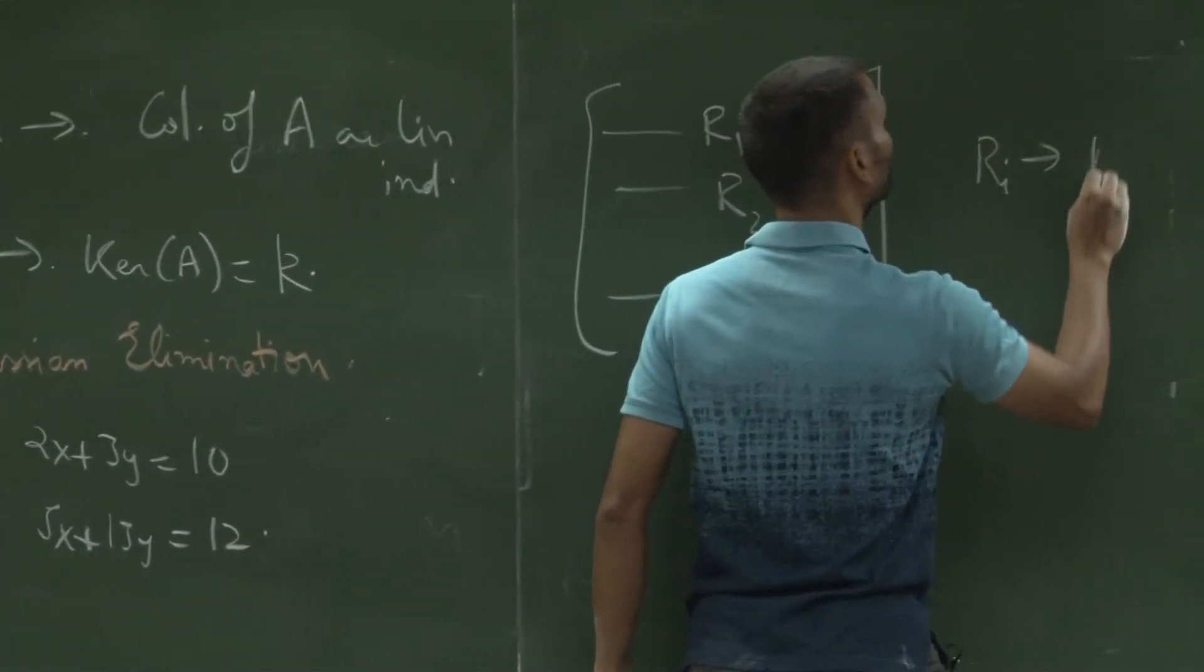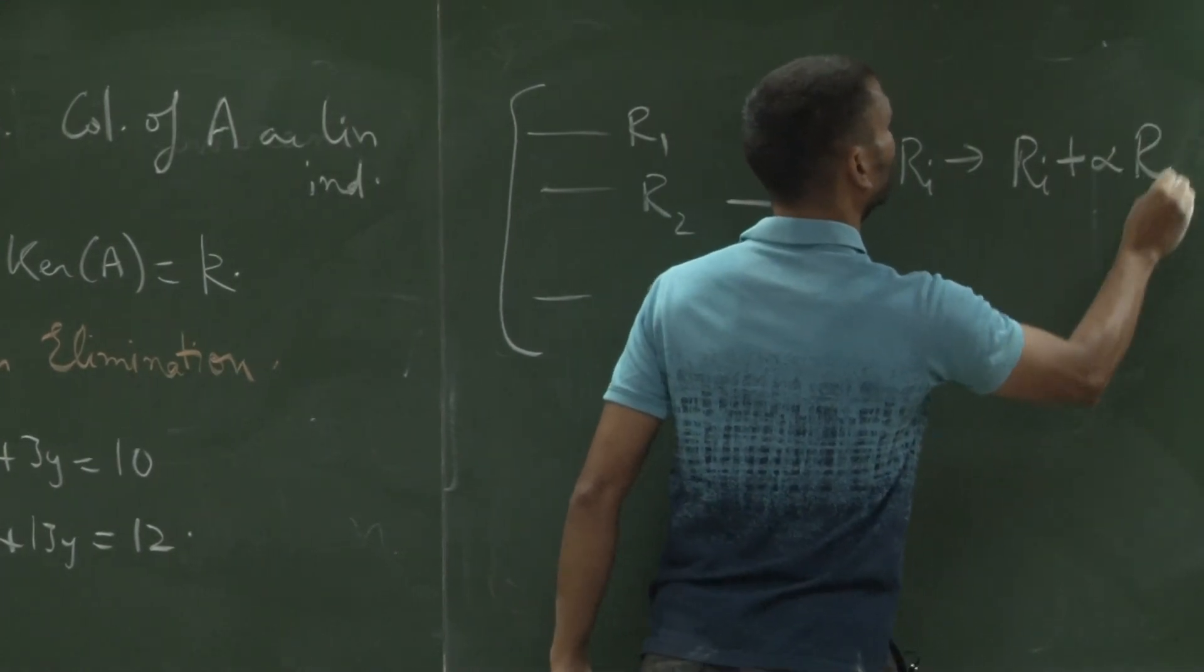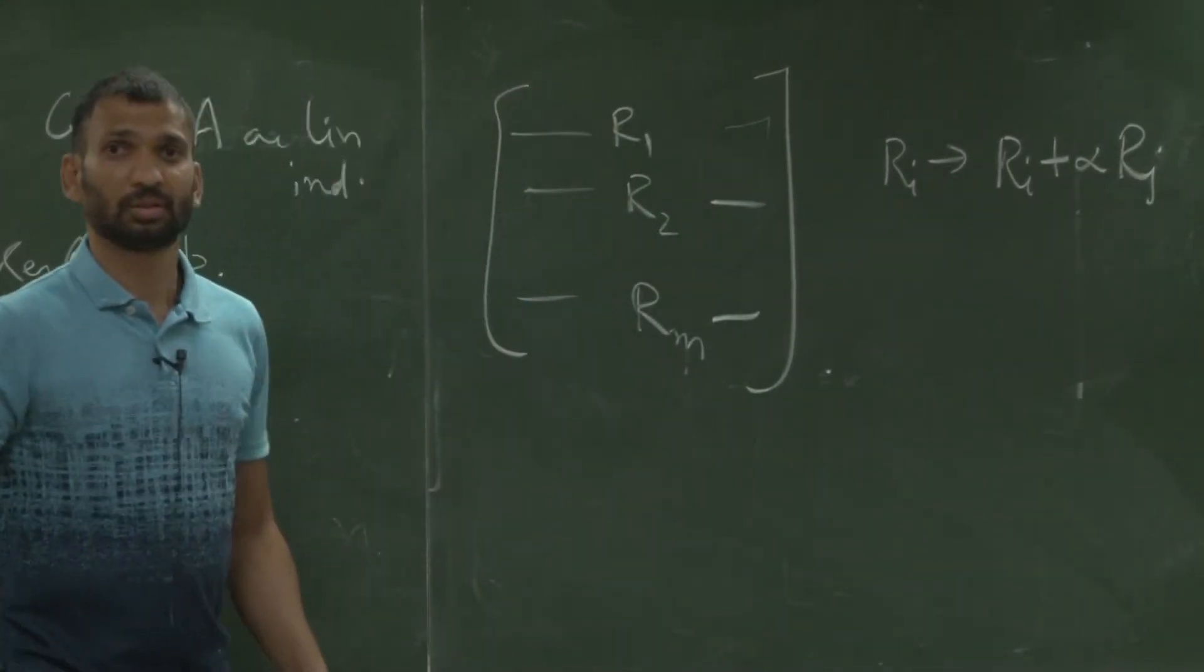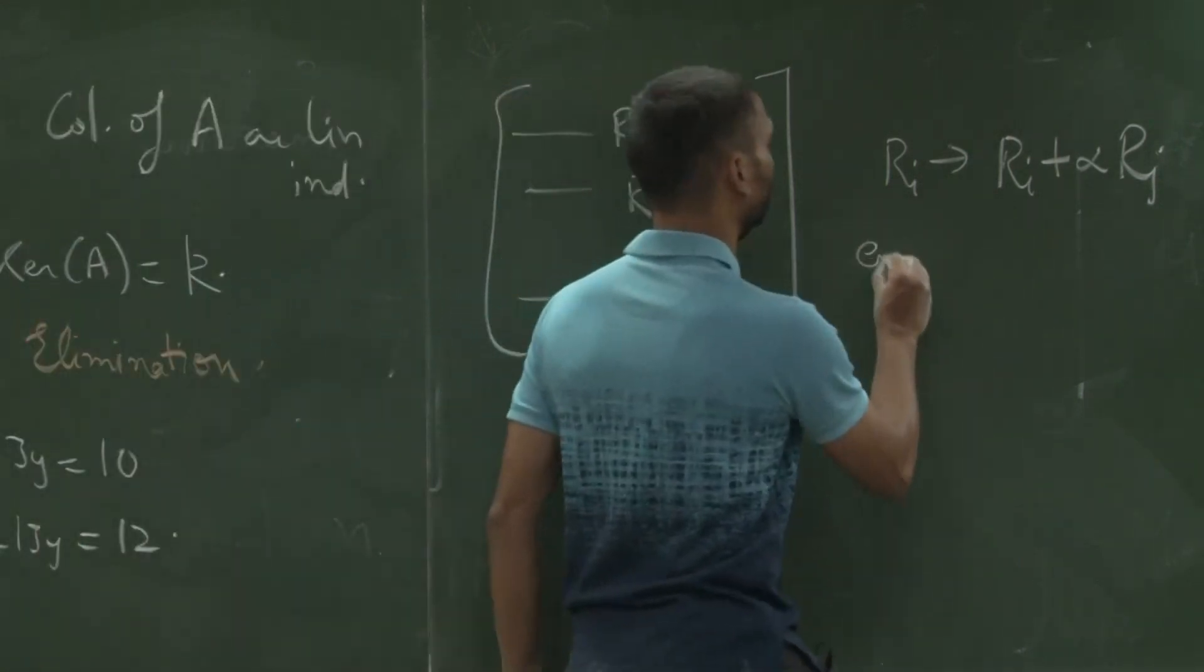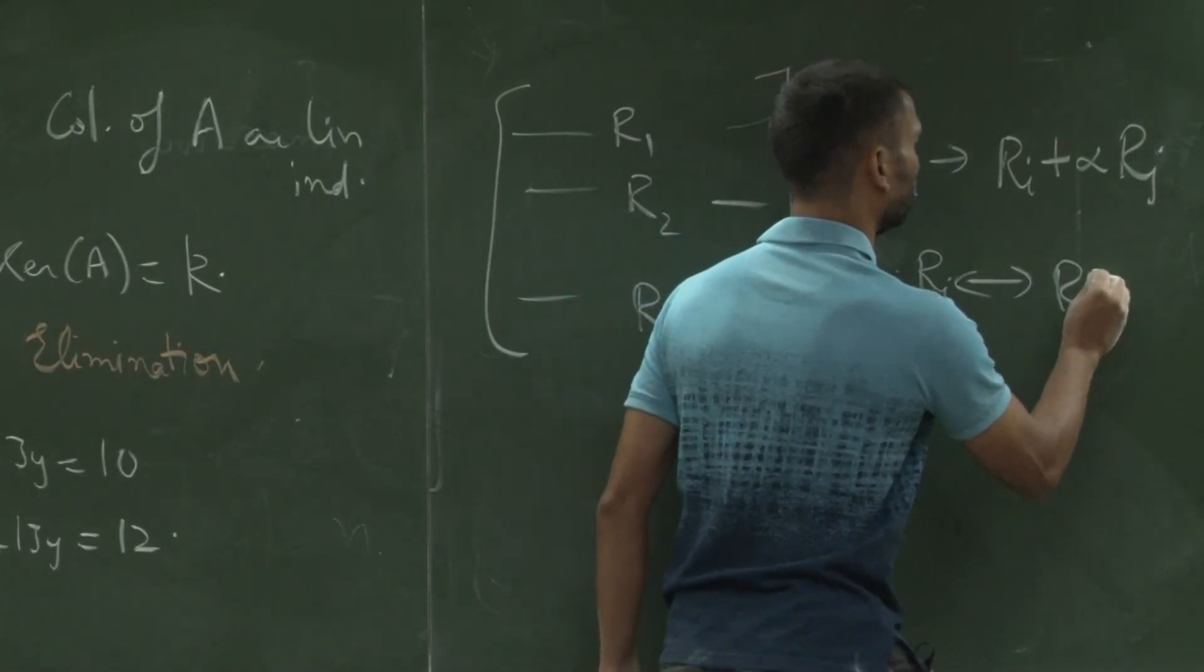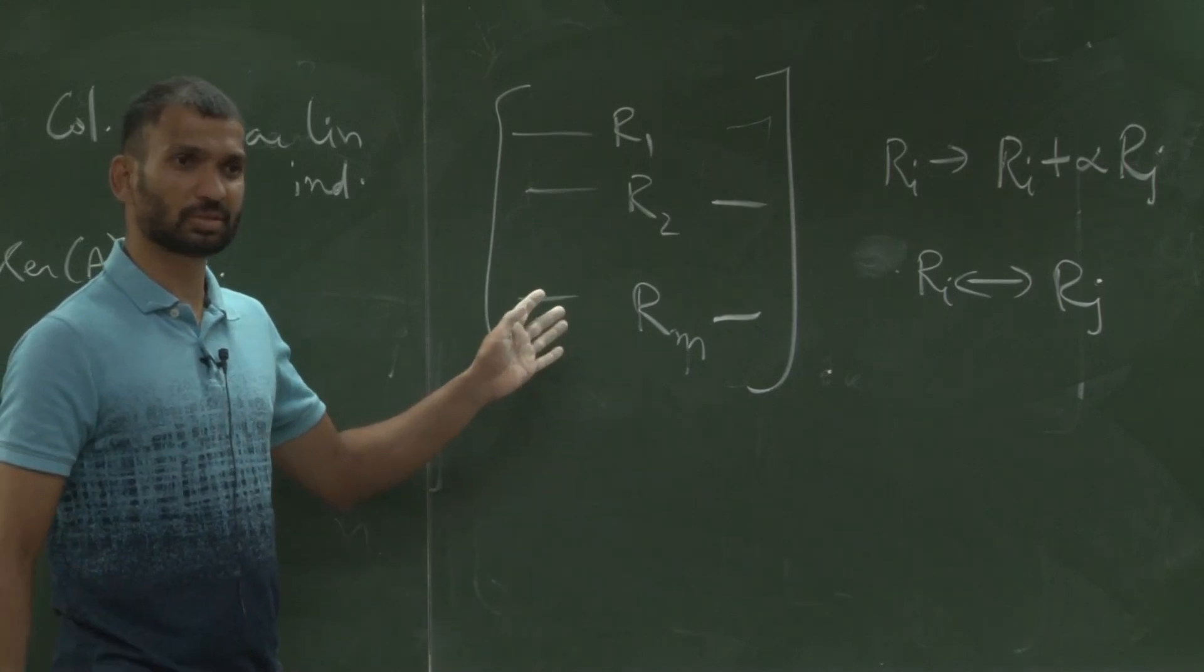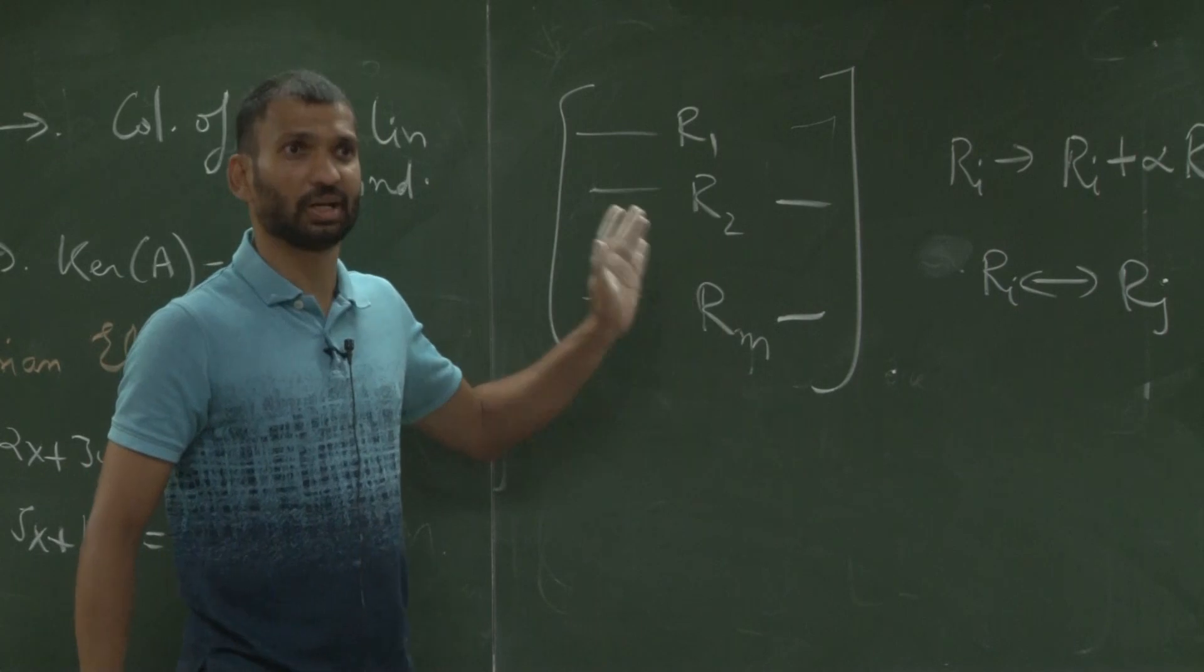We can replace a row by R1 plus alpha j Rj or something, right. So any Ri can be replaced by, correct? You remember this operation. And you can, does this remind you? People have seen this right. Linear algebra course, we do this. This is Gaussian elimination.